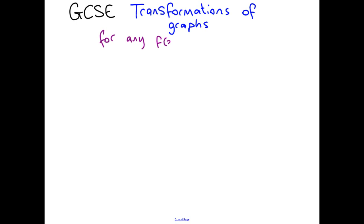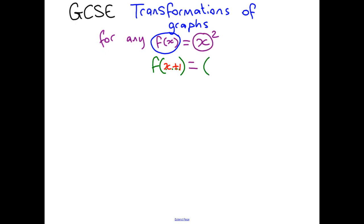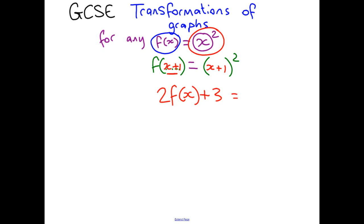For any f(x), these rules are going to work. Now what you do have to know at A-level, that you don't really have to know so much at GCSE, is what happens when you change this f(x). You can change x inside, so you could say x add 1 — that means in your equation you have to change x there as well. So if your equation is x squared, you change x to x plus 1. Or if you have 2f(x) plus 3 and your equation was x squared, you do 2 times your equation — 2 times x squared — then add on the 3. So that's the basics of what we do when we change f(x).